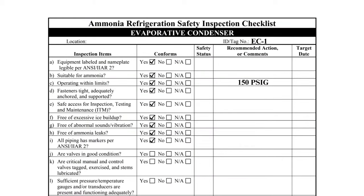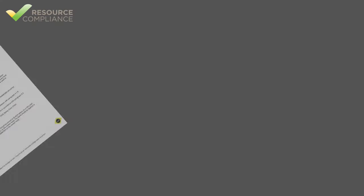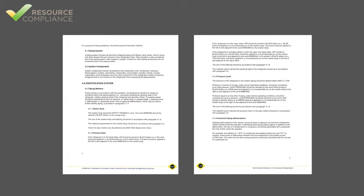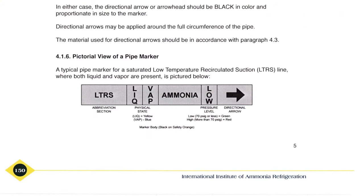Item I inquires if the pipes are marked as required by IIAR Standard 2. Standard 2 requires piping mains, headers, and branches to be labeled with the following: the word ammonia printed in black letters; the physical state abbreviation LIQ or VAP; the relative pressure — high or low; an arrow depicting the direction of flow in the pipe; and a service abbreviation indicating the purpose of the pipe.